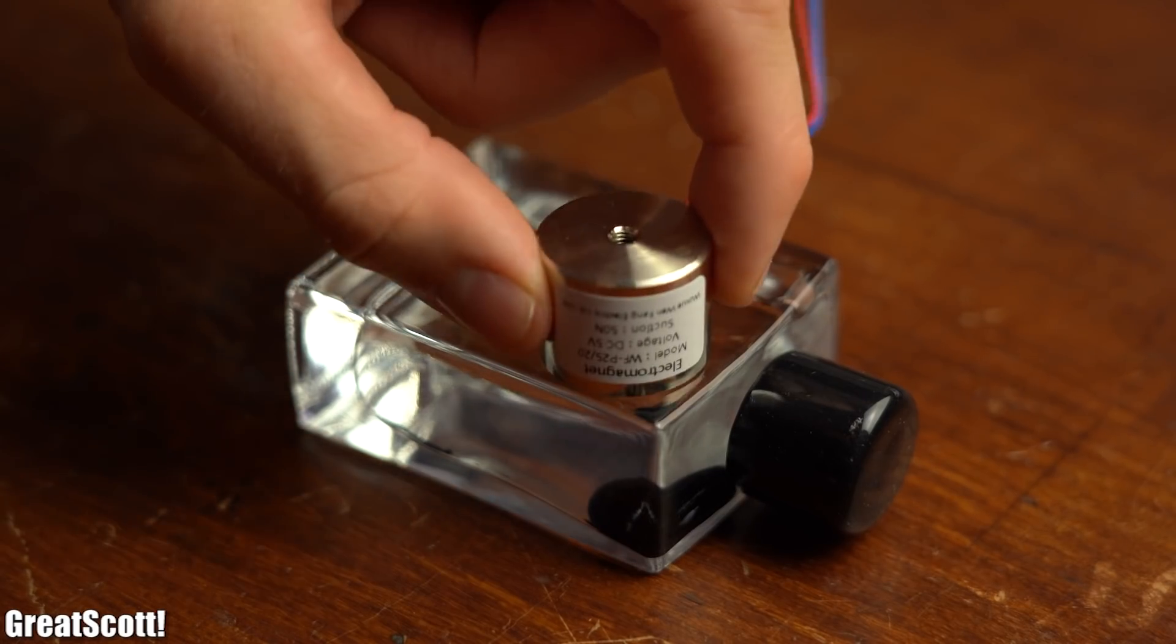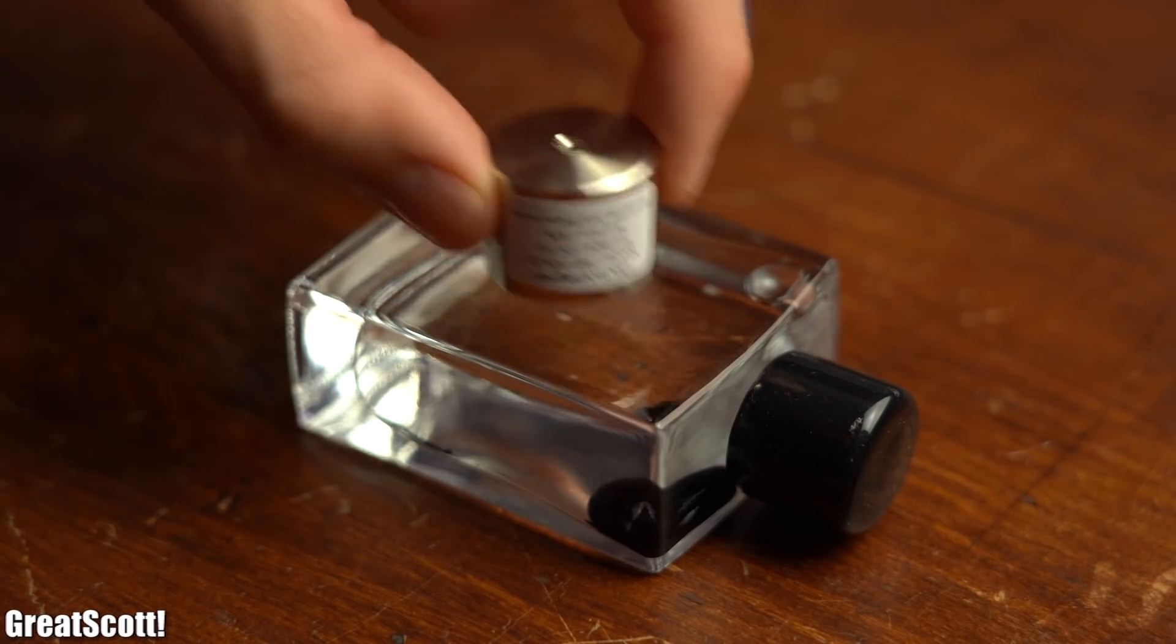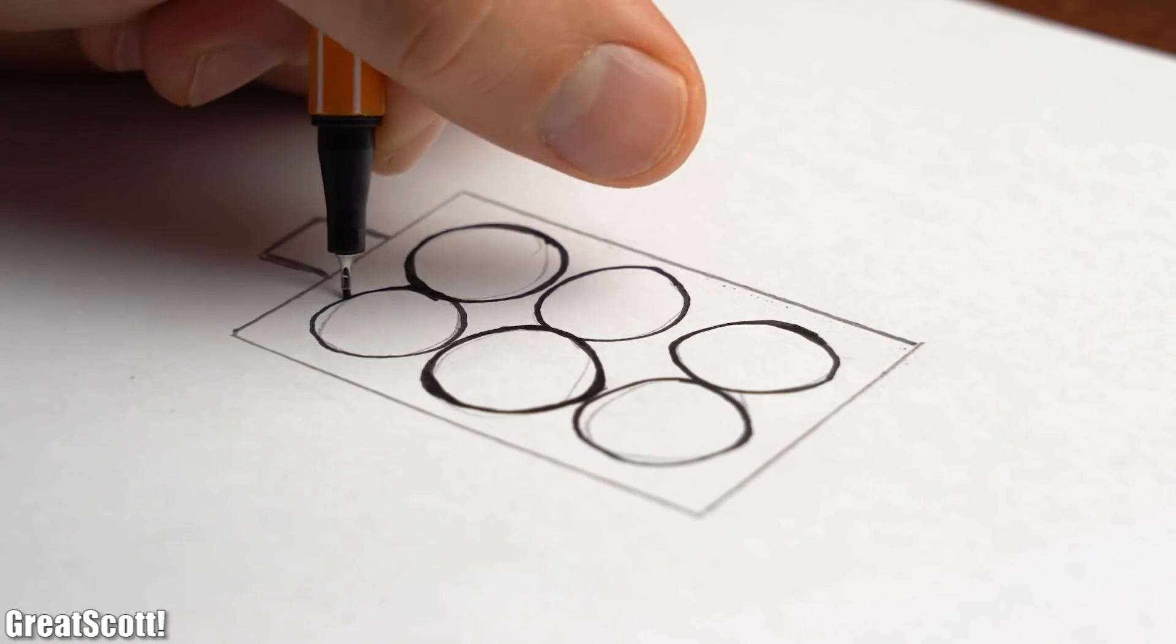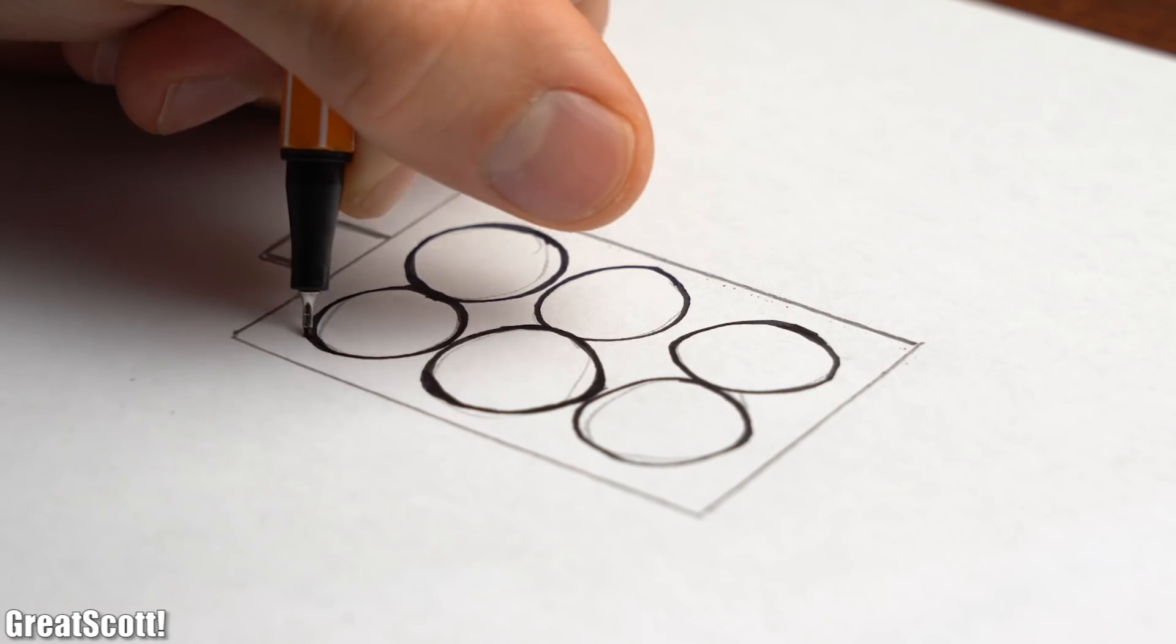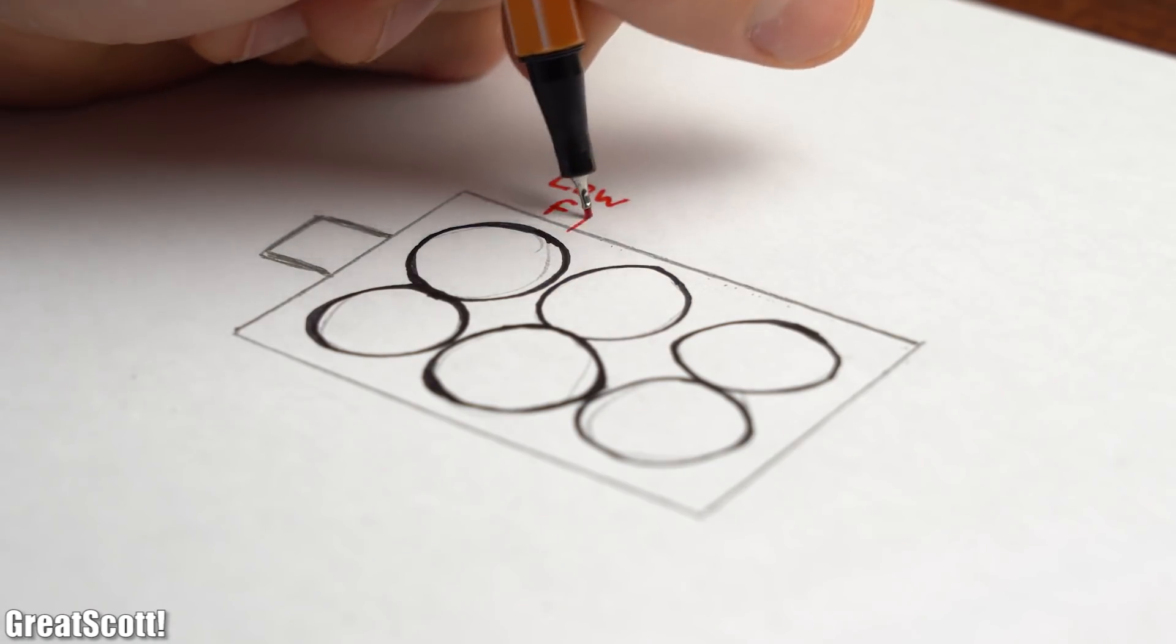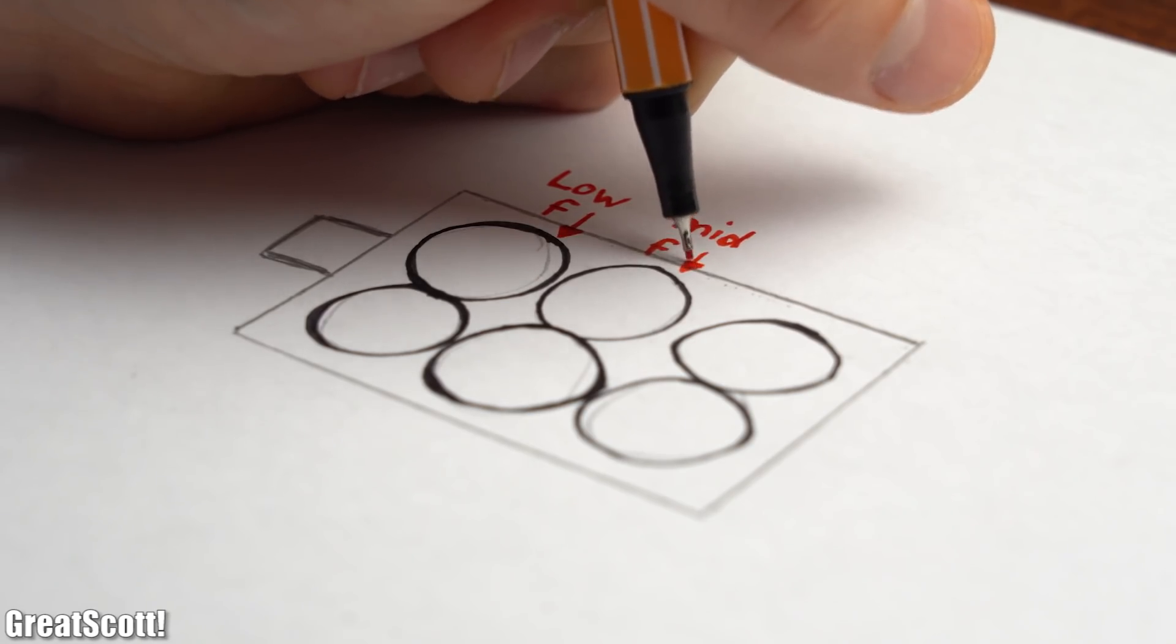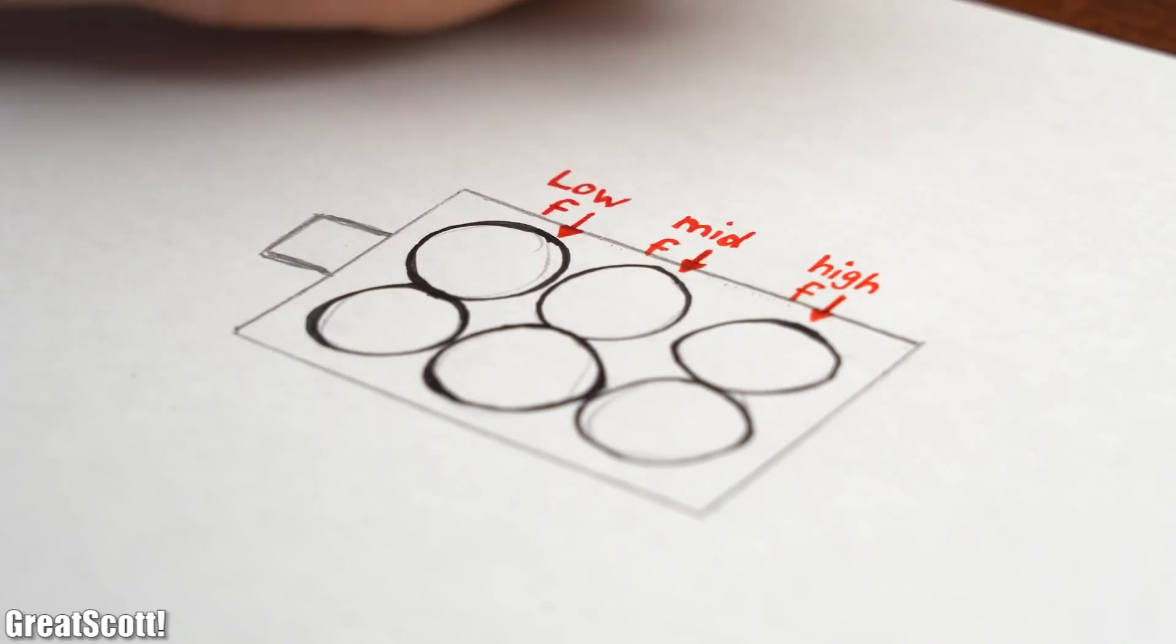The problem is that the big magnet is simply too big for my idea which is that I will position 6 magnets behind the flask in this layout. The left ones react to the low frequencies so the bass, the middle ones react to the middle frequencies and the right ones to the high frequencies.